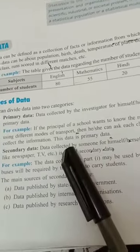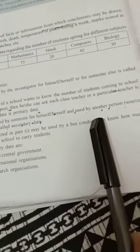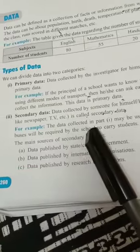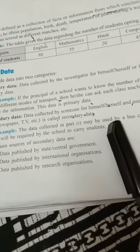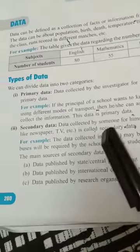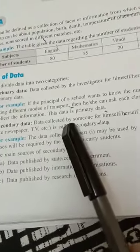Secondary data - after the principal receives the data, if the principal hands over that same data to the bus conductor to determine how many buses will be required by the school to carry the children, then the same data is being used by another person. So, first one is primary, second is secondary data.